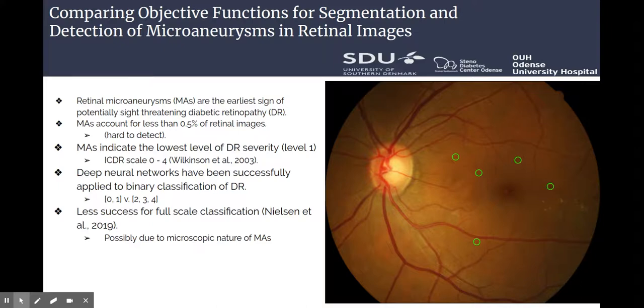Retinal microaneurysms are the earliest sign of potentially sight-threatening diabetic retinopathy. They account for less than 0.5% of retinal images and are therefore hard to detect. They indicate the lowest level of diabetic retinopathy.